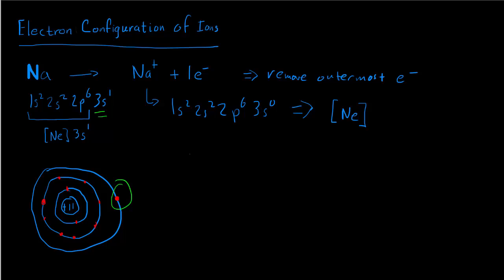Let's consider another example. Let's imagine that we've got an oxygen atom, and we're going to take two electrons and give them to the oxygen atom to make oxide, O2 minus. We know that oxygen typically forms a negative 2 charged ion. So if we look at the electron configuration for oxygen using shorthand notation, it's the electron configuration of helium, then 2s2, 2p, and counting over on the periodic table — 1, 2, 3, 4 — so 2p4 is the electron configuration for just an oxygen atom.